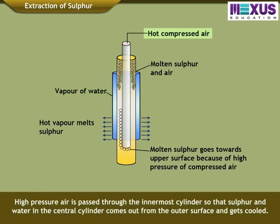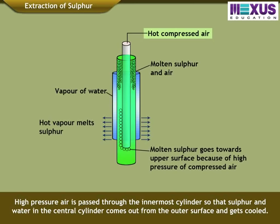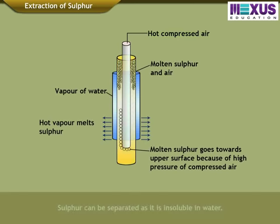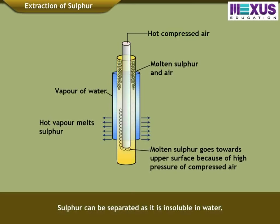Air, having high pressure, is passed through the innermost cylinder, so that Sulphur and water in the central cylinder comes out from the outer surface and gets cooled. Sulphur can be separated as it is insoluble in water.